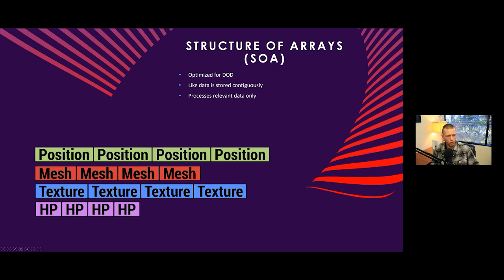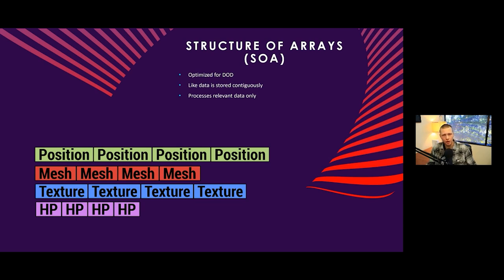With this structure of arrays, we can grab just the arrays we need and don't have to worry about health components or any other random components associated with them. We can just grab those and process everything in line. It's really easy for the CPU to process sequential data in the same manner — if we're doing a lot of position modification, it's much easier to do many add operations sequentially rather than mixing in memory-shifting operations.